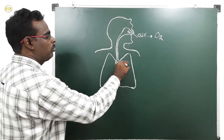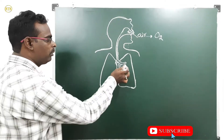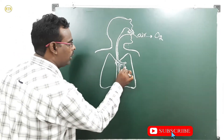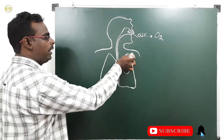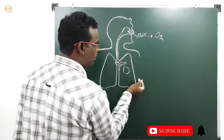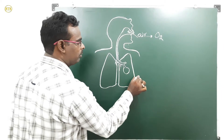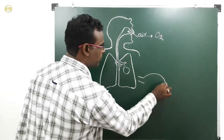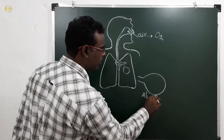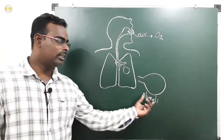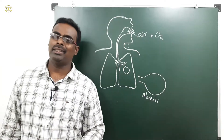The trachea divides into branches called bronchi, which divide into many smaller branches called bronchioles. At the end of the bronchioles, a sac-like structure is present. All bronchioles end with these sac-like structures. For convenience, I am drawing this structure here — it is called an alveolus (plural: alveoli).